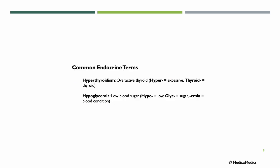Some common endocrine terms: hyperthyroidism means overactive thyroid — 'hyper' means excessive, so hyperthyroidism. The opposite would be hypothyroidism — 'hypo' means below or under. Hypoglycemia means low blood sugar — 'hypo' means low, 'glyc' comes from sugar or glucose, '-emia' means blood or a blood condition. The opposite, high blood sugar, would be hyperglycemia.